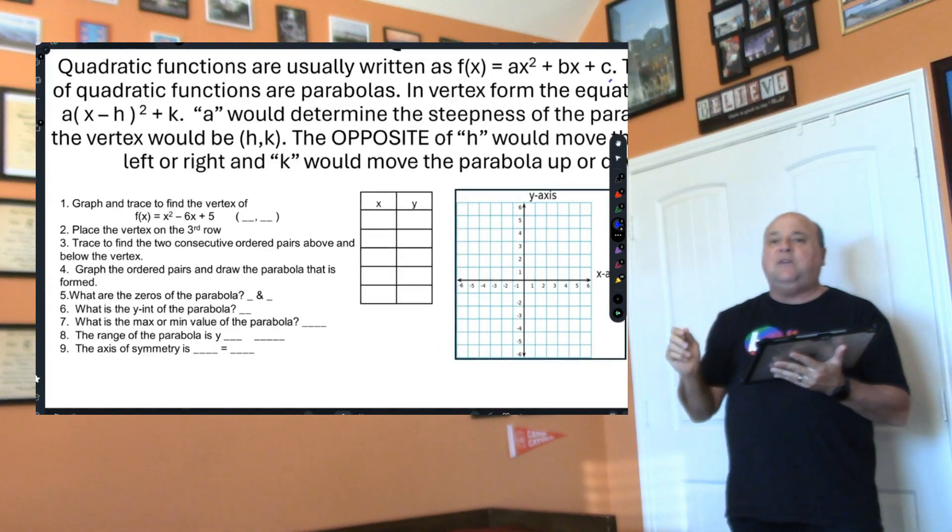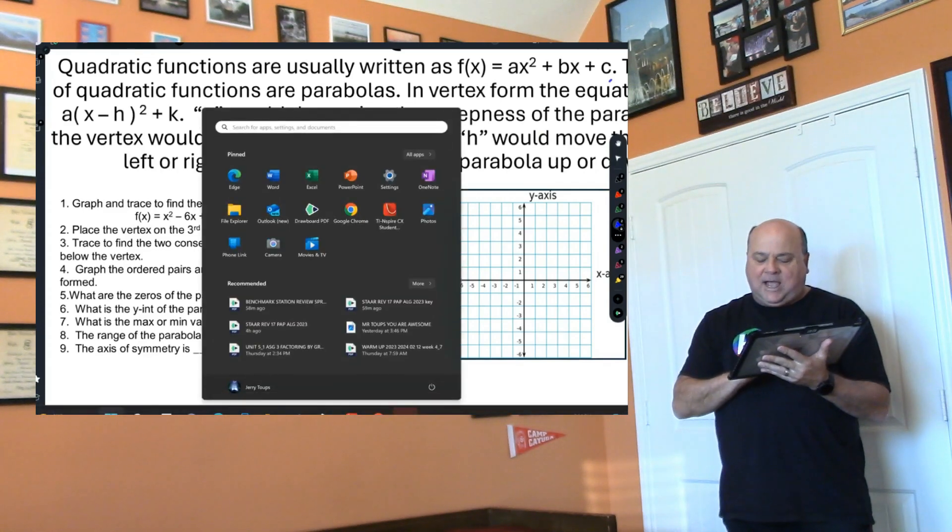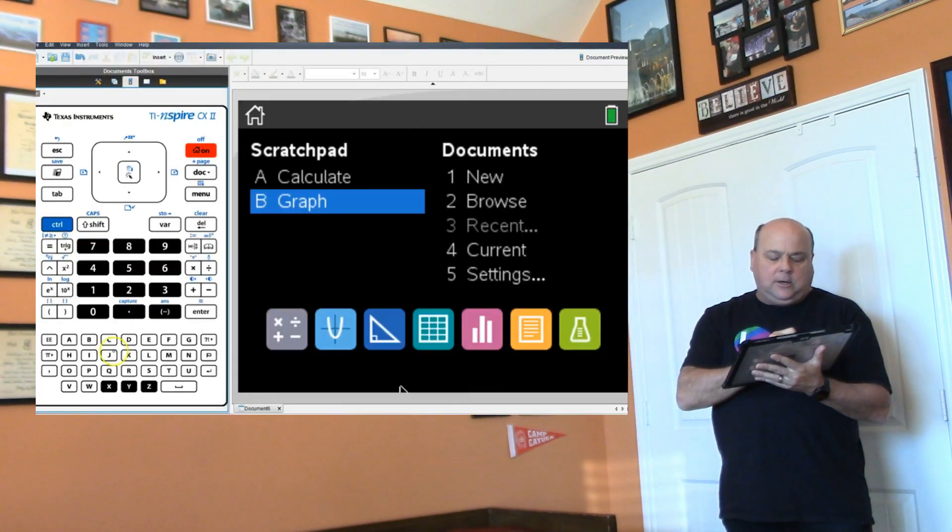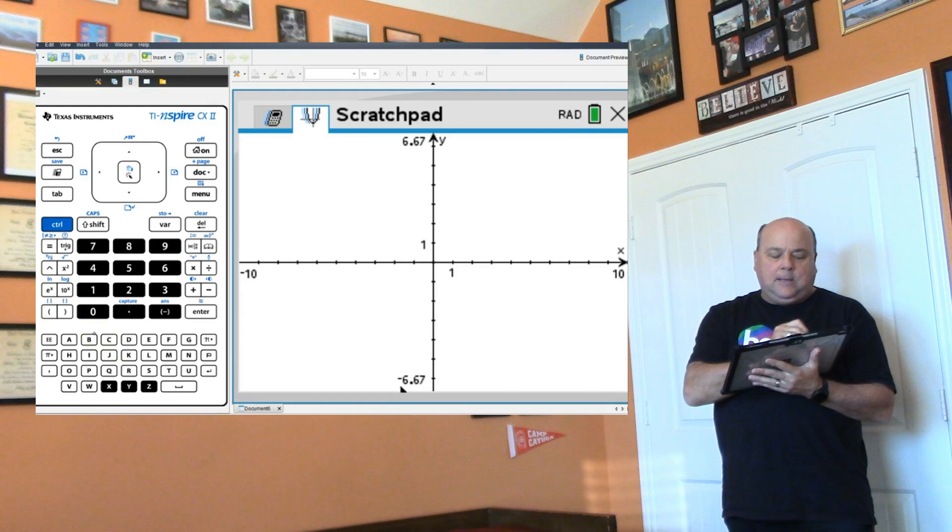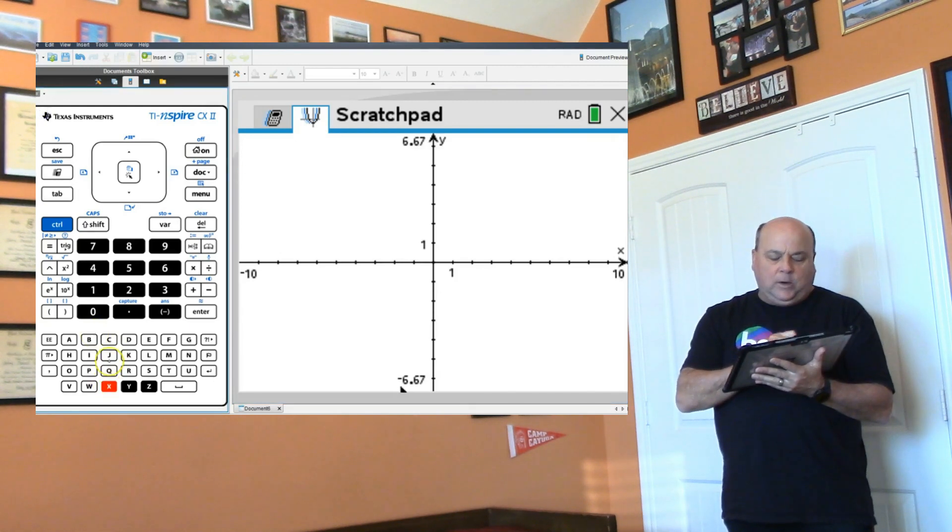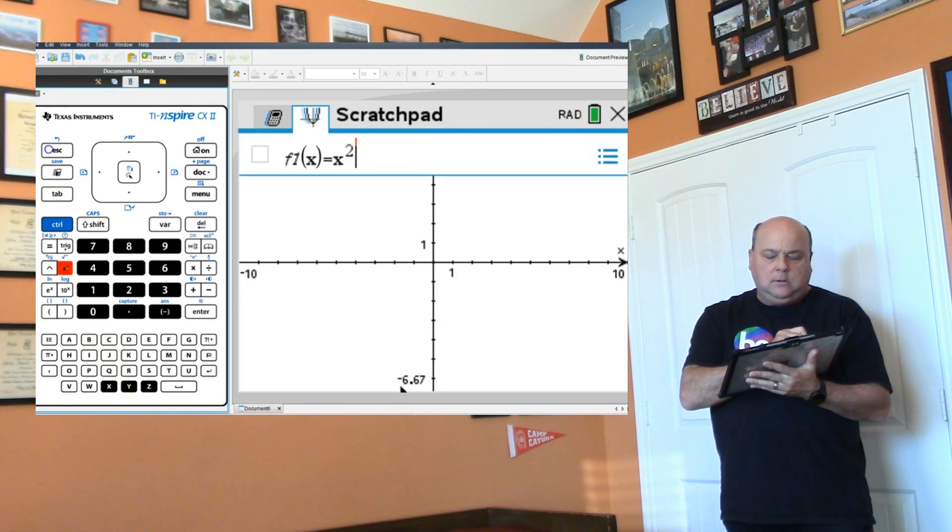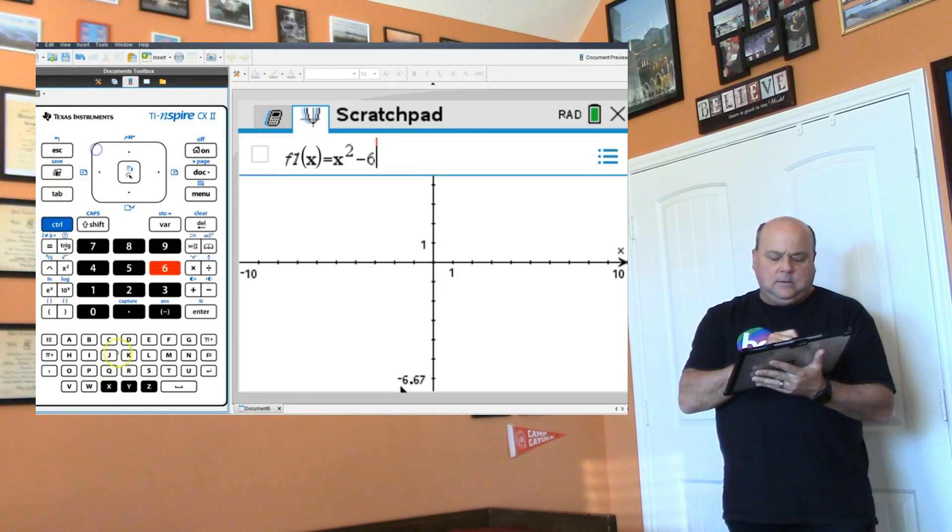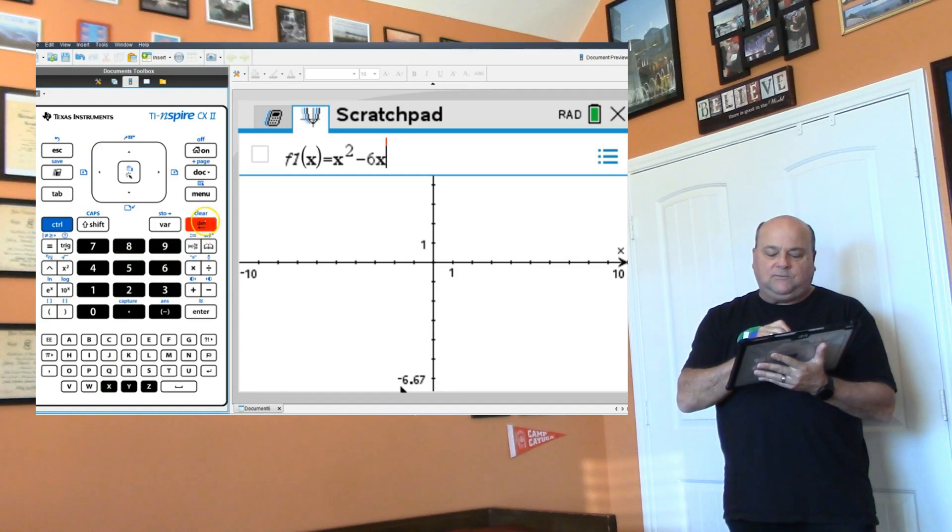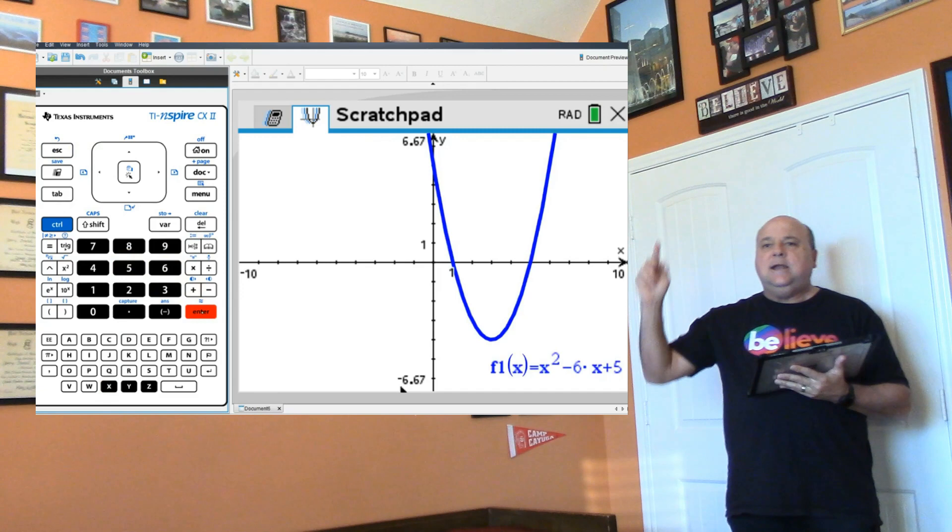We've got to know what these parabolas do. So the first thing we're going to do is graph x squared minus 6x plus 5. I'm going to go to my calculator, hit graph, and enter x squared minus 6x plus 5. Now I have my parabola graphed.